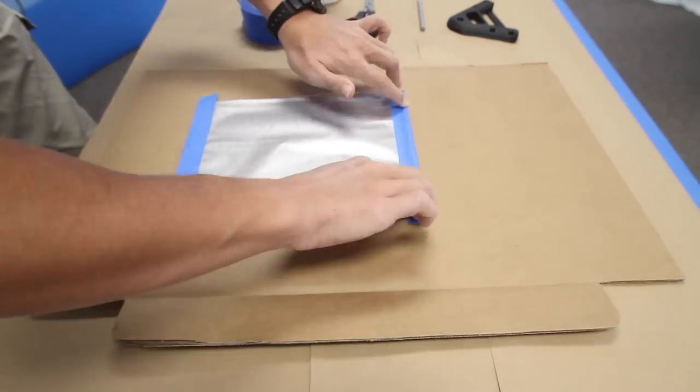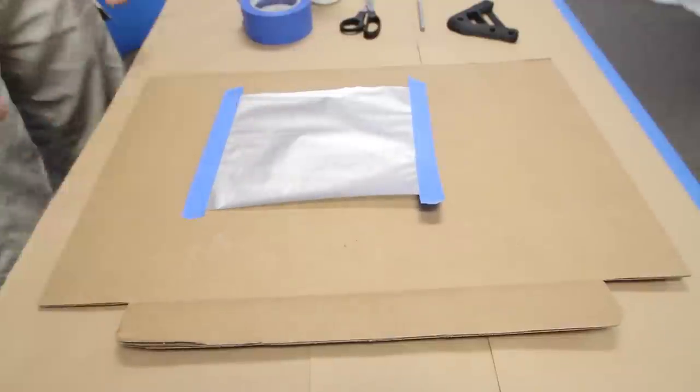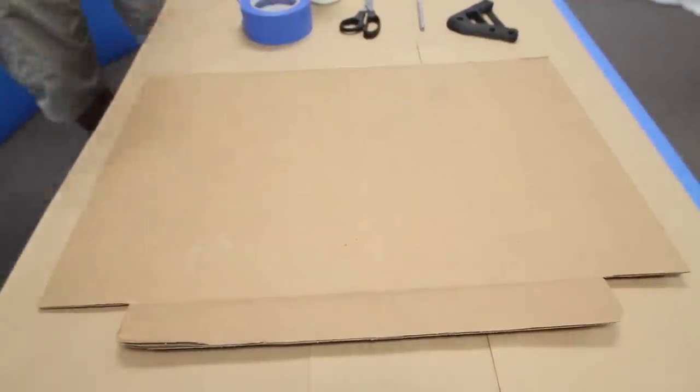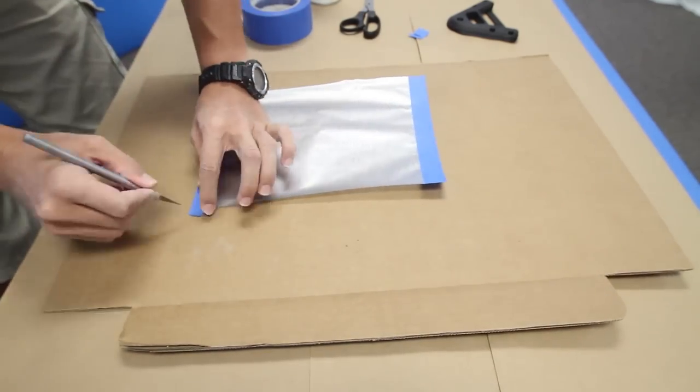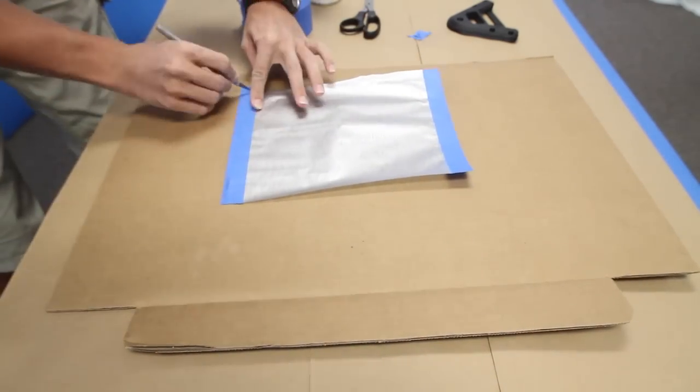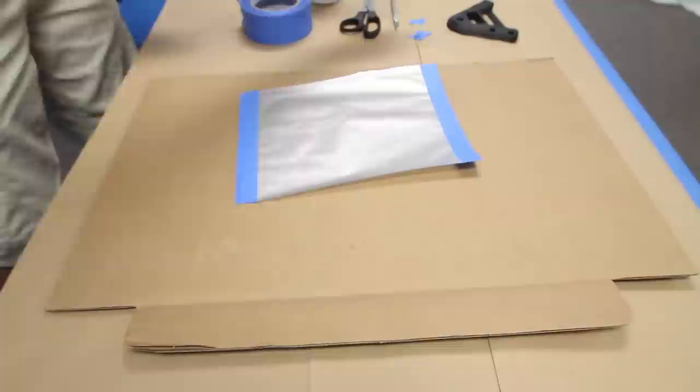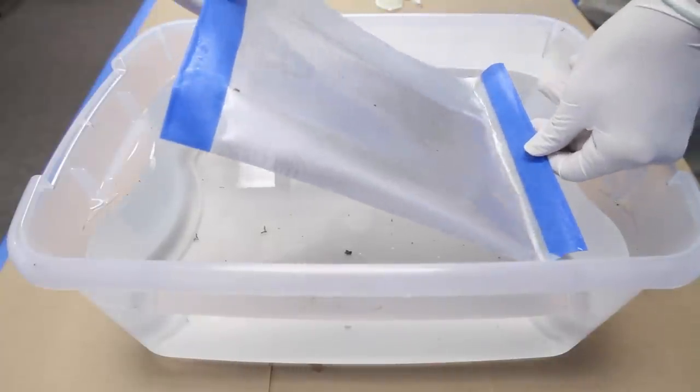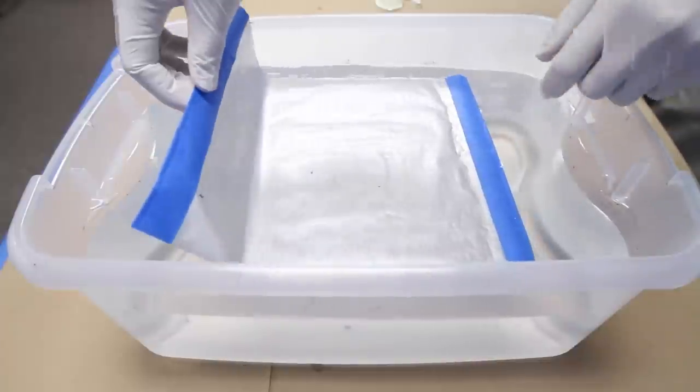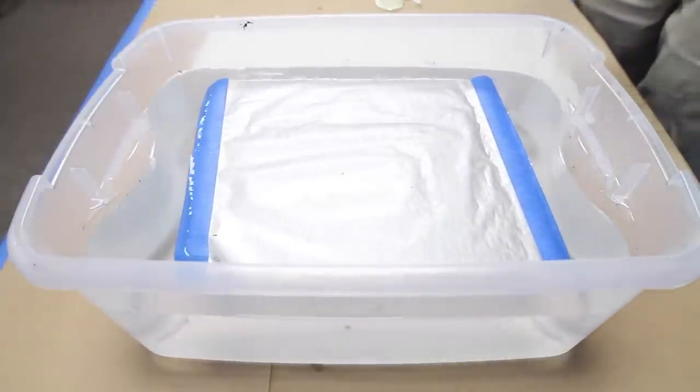When you lay the film in the water, you want to start with one edge and then gradually lay down the rest of it so that you don't get any air bubbles underneath.